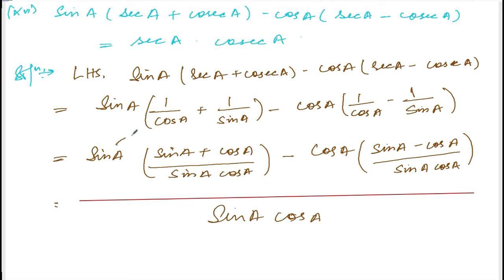Numerator: So sin into sin, it will be sin squared A, plus sin into cos, it will be sin A cos A, minus cos into sin, it will be minus cos A sin A.